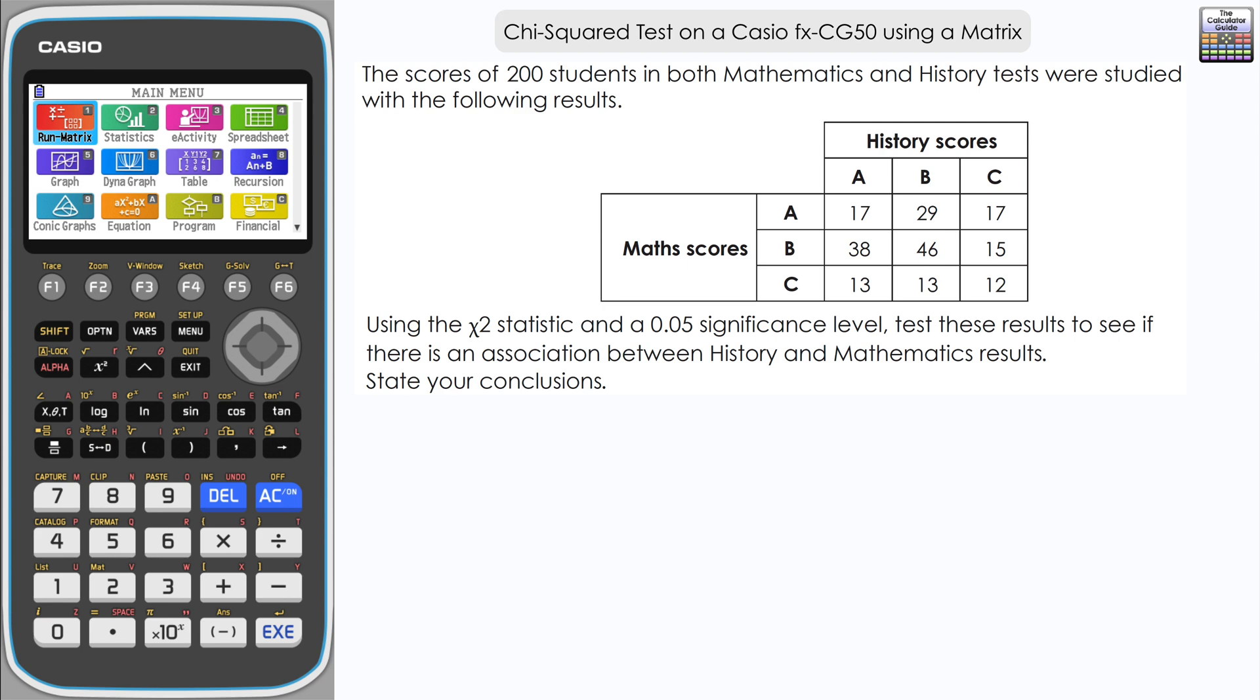Using the chi-squared statistic and a 0.05 significance level, test these results to see if there is an association between history and mathematics results. We've got to state our conclusions.